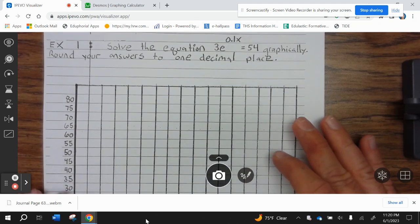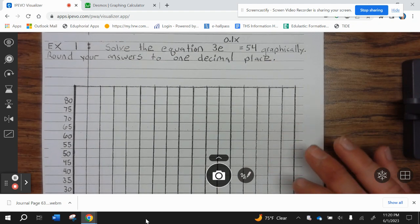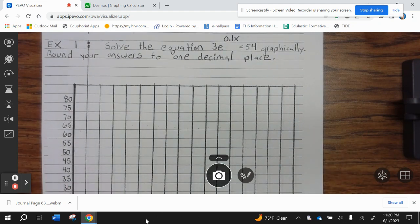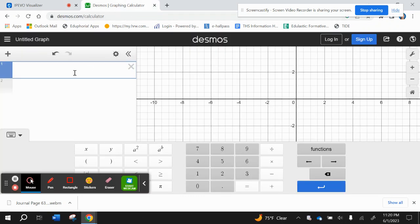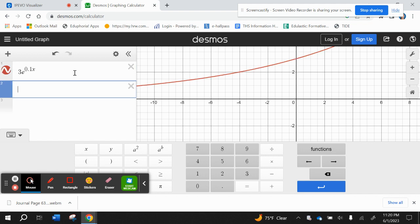Step 1, solve the equation 3e to the 0.1x equals 54 graphically. So first off, we need to graph the left side. We're going to graph 3e to the 0.1x, and we're going to graph y equals 54.